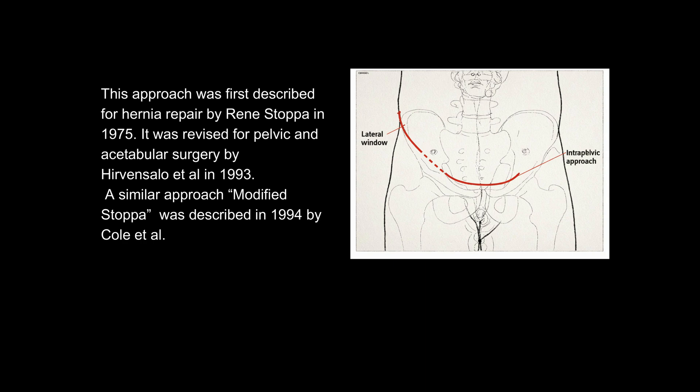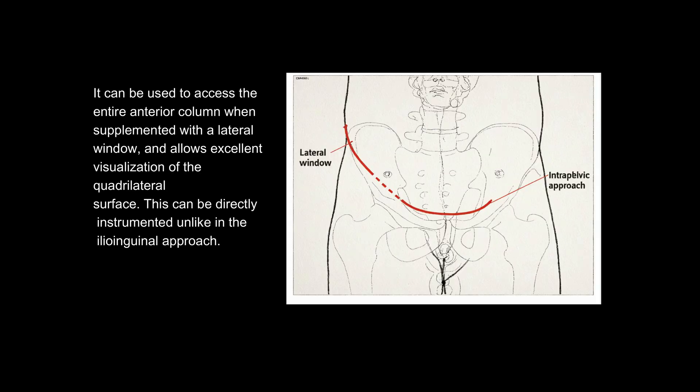A similar approach, modified stopper, was described in 1994 by Cole et al. It can be used to access the entire anterior column when supplemented with a lateral window and allows excellent visualization of the quadrilateral surface. This can be directly instrumented unlike in the ilioinguinal approach.